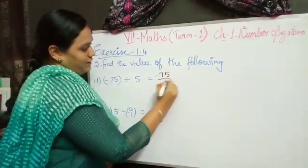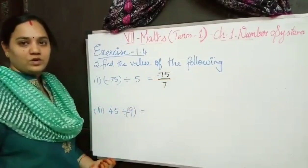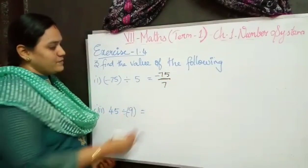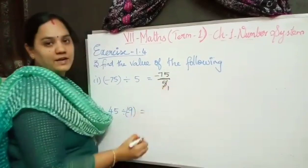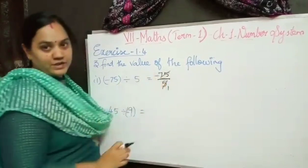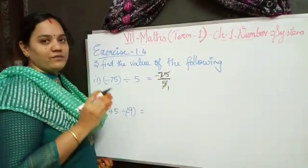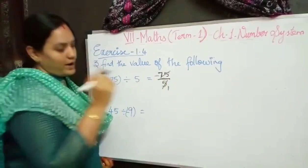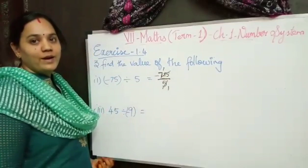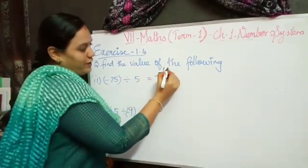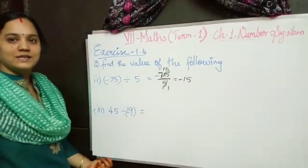Minus 75 divided by 5, written in fraction form. We cancel using the 5 table. 1 five is 5, then we take 7: 5 goes into 7 once with remainder 2, bringing down 5 to make 25. 5 fives are 25, so the answer is 15. Different sign, so my answer is minus 15.